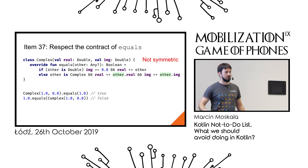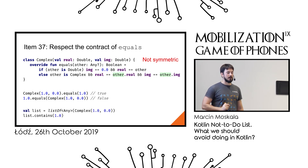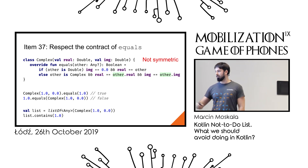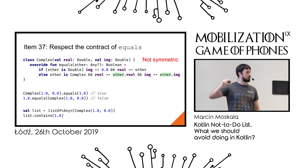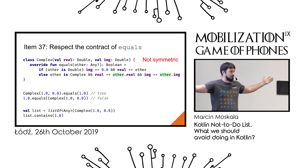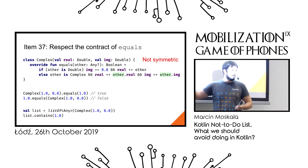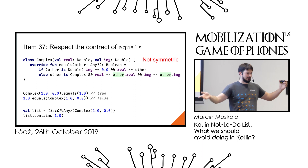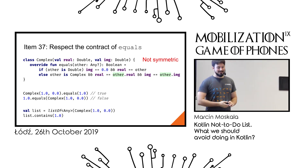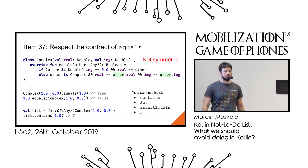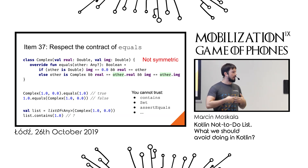What does a non-symmetric equals mean in practice? If you place a complex number in a list and check if it contains a double, the result depends on the implementation under the hood — one collection might check this-to-that or that-to-this. One collection says true, another says false. You cannot trust any collection or anything that uses equals internally: contains, set, assertEquals, and many more.